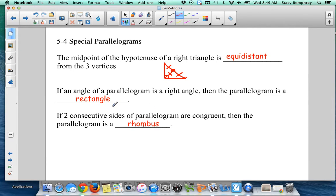If an angle of a parallelogram is a right angle, then the parallelogram is a rectangle. Because if one angle is a right angle, if you follow the logic, you should be able to prove all of them are right angles.